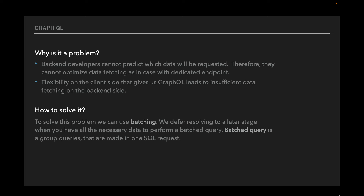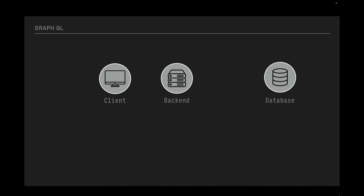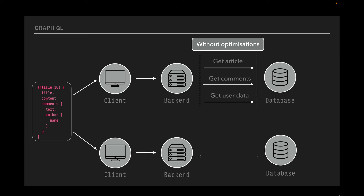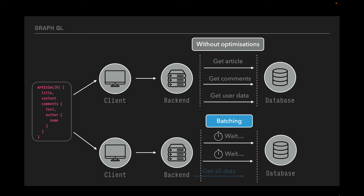Let's see how batching works. For example, the client requests an article with a list of comments. Without optimization, we have to make three requests to the database. With batching, we do not immediately make a request to the database. Instead, we wait until all needed data about the request is received, and only when we know exactly what we have to fetch do we do a single request to the database.